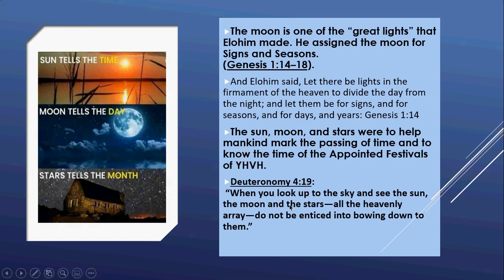Deuteronomy 4:19 again says: 'When you look up to the sky and see the sun, moon, and stars and all the heavenly array, do not be enticed into bowing down and serving them.' We know these have been made into many images and worshipped. It all starts with paganism, and it's in many of our churches today.